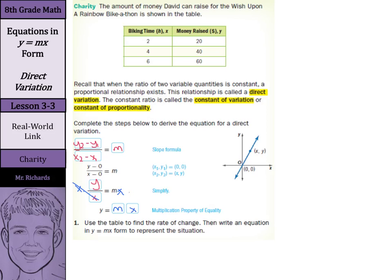Use the table to find the rate of change, then write an equation in y equals mx form to represent the situation. Well, from 20 to 40, we're increasing by 20. From 2 to 4, we're increasing by 2. So our change is 20 over 2, which is $10 per hour. Our rate of change is going to go in for m. So y equals 10x.